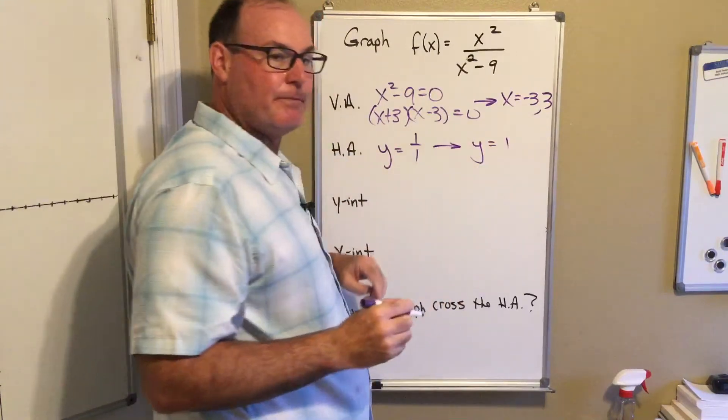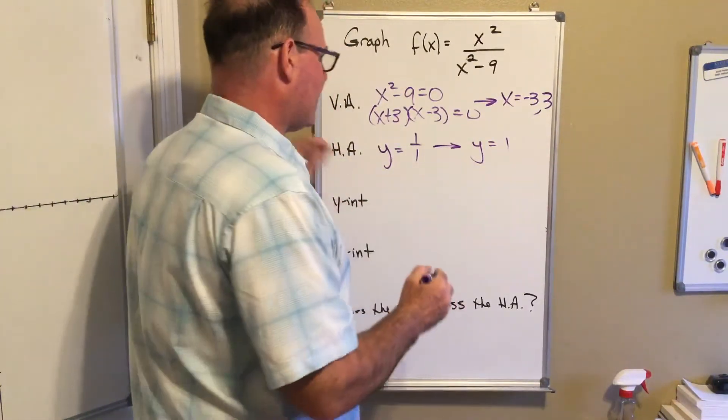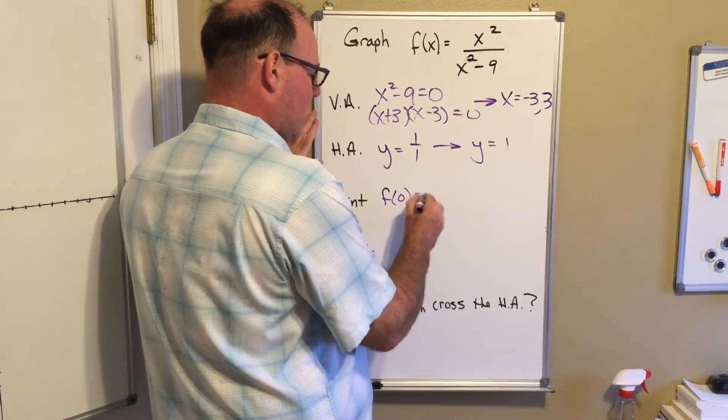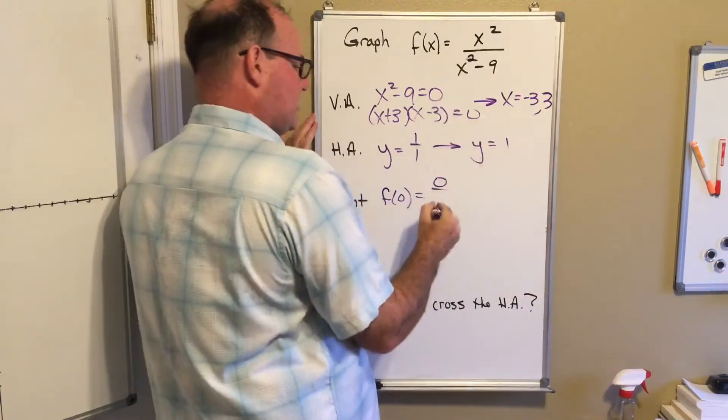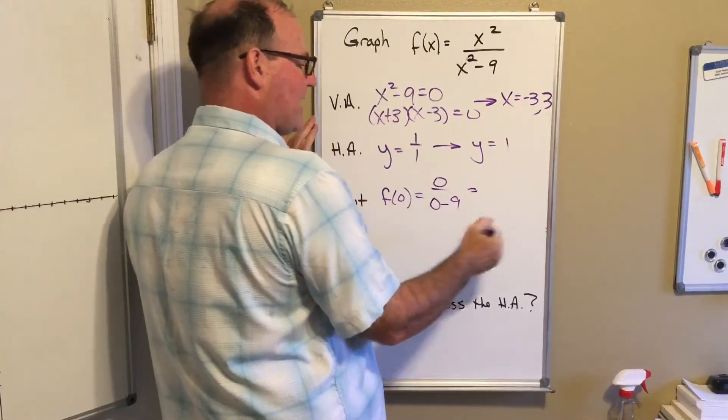The y-intercept happens when I plug in zero into my function. When I do that, I have zero squared in the top and then zero minus nine in the bottom. Zero divided by anything is zero, so the origin is the y-intercept.